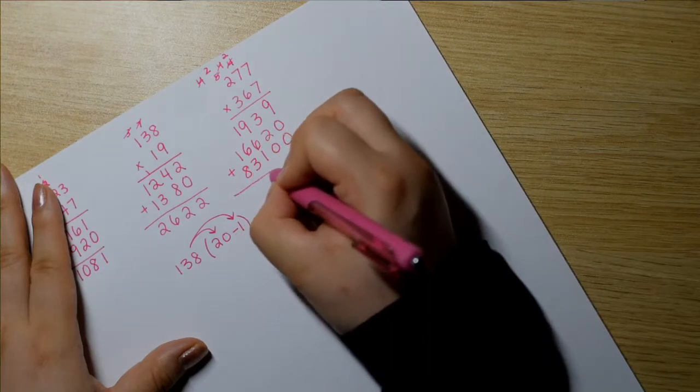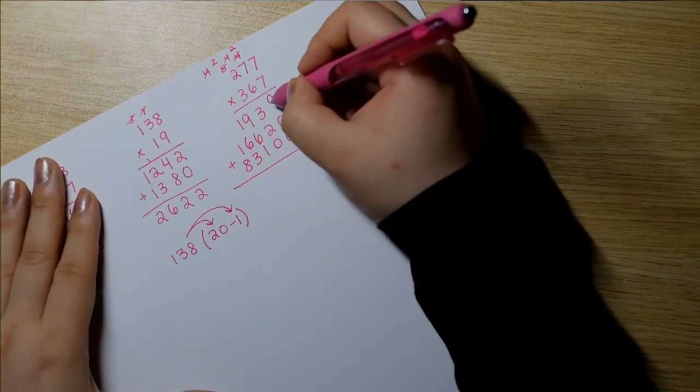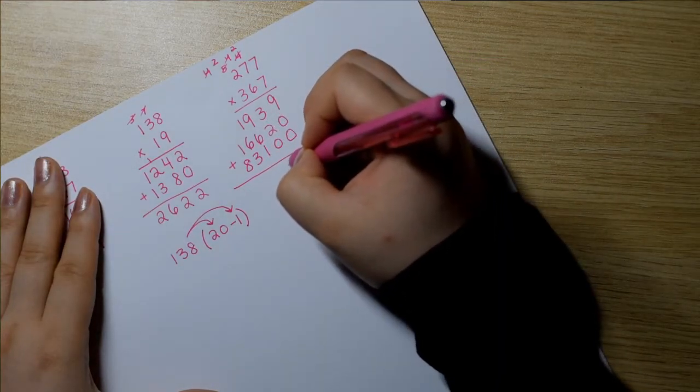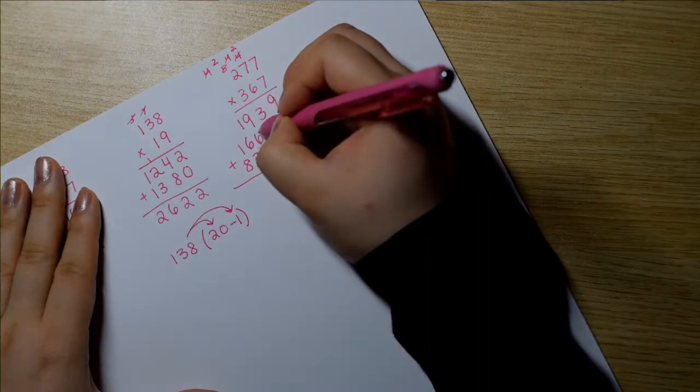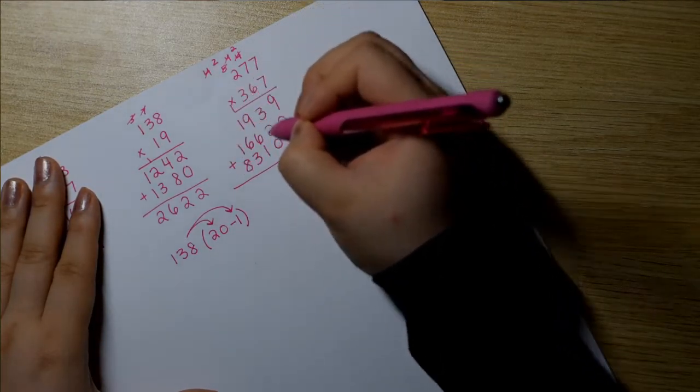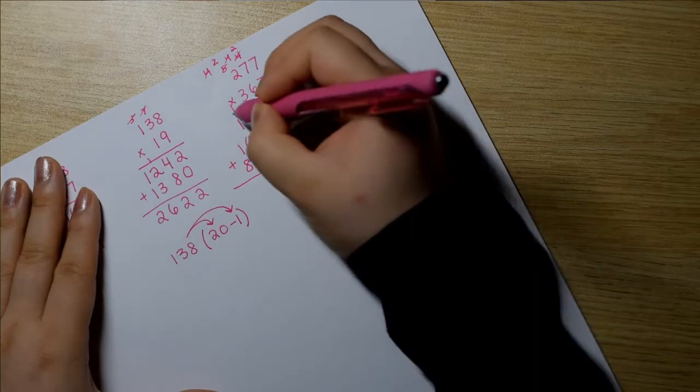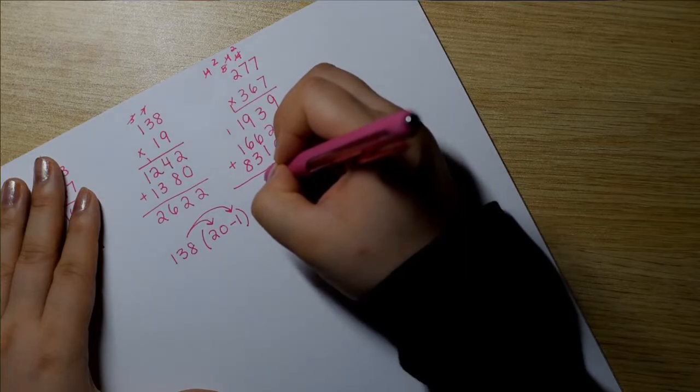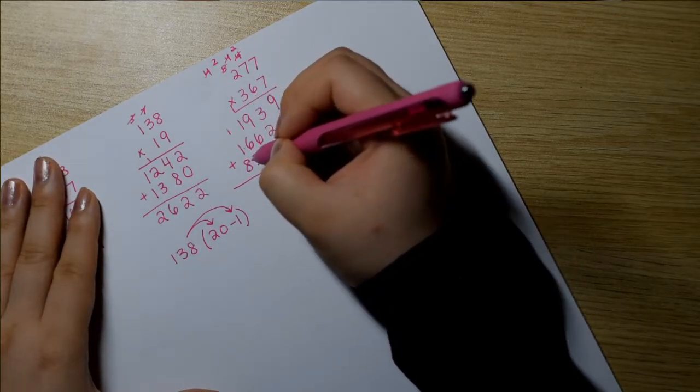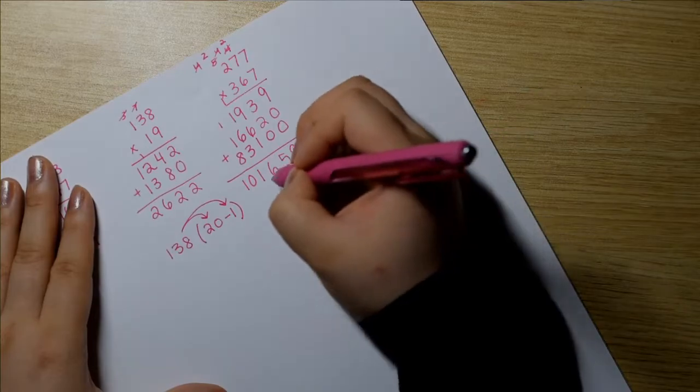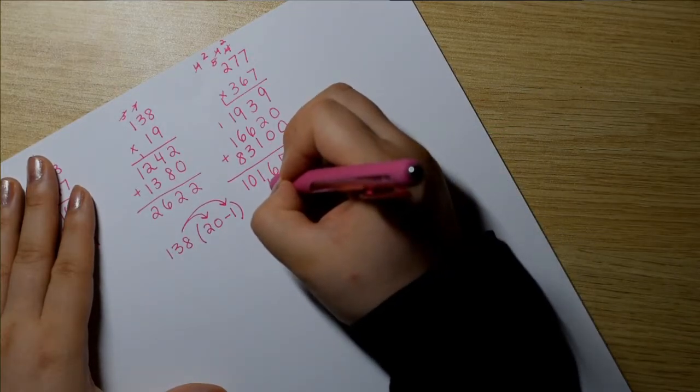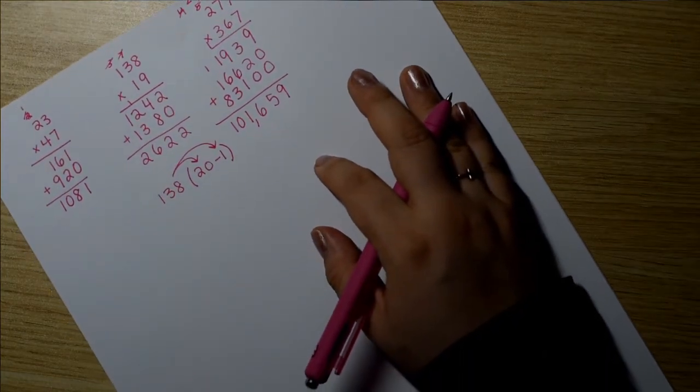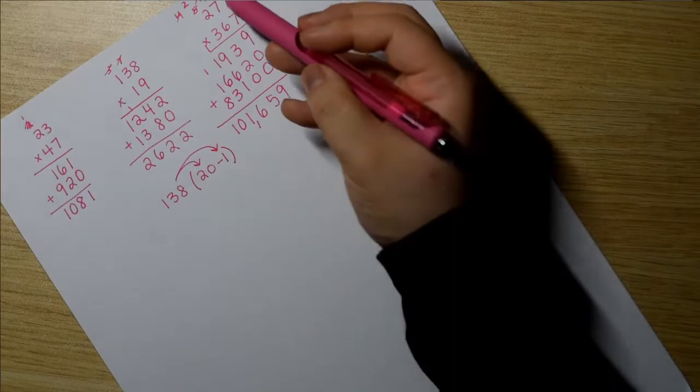And now hopefully we really did line this up nicely so that we can add. 9 plus 0 plus 0 is 9. 3 plus 2 plus 0 is 5. 9 plus 6 is 15. Plus 1 is 16. 1 plus 1 is 2. Plus 6 is 8. Plus 3 is 11. 1 plus 1 is 2. Plus 8 is 10. And wow, we... 101,659. Look at you go. Look at you go. It's huge, right? But you did it.